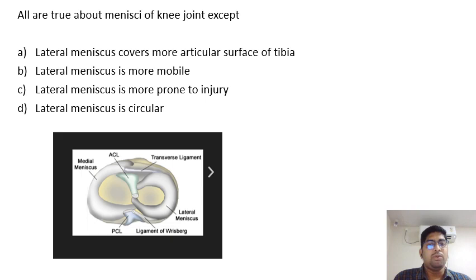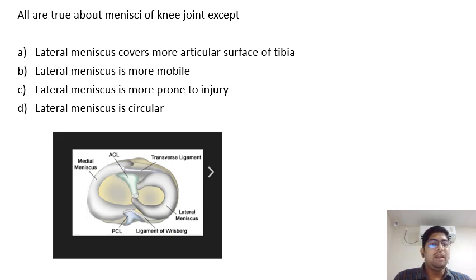Lateral meniscus is more prone to injury — that is wrong. Because the lateral meniscus doesn't have any attachments, it is free to move during any injuries or contact sports. But the medial meniscus is attached to the adjacent capsule, and it can only move by tearing itself. That's why medial meniscus tears are more common compared to the lateral meniscus.